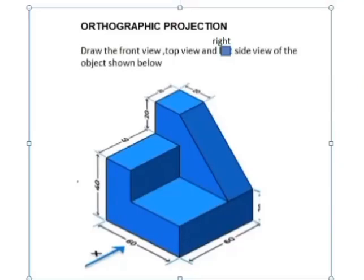We are going to see how to draw an orthographic projection from an example problem. One block is there, so its dimensions will be given. You have to draw the front view, top view, and right side view of the object. Let us see how to draw the orthographic projection step by step.